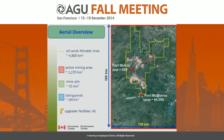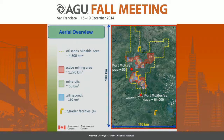This is an aerial overview of the oil sands region. There's about almost 5,000 square kilometers of mineable area, of which about 1,300 square kilometers is being mined right now. There's also mine pits, tailings ponds, upgrading facilities on site, and all of these have their own unique emissions, which we set out to try and measure.